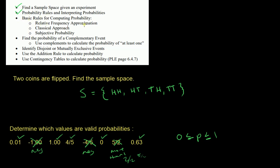Basic rules for computing probabilities — we have three methods. The subjective probability won't really be covered on the exam because it's not really a computing method; it's more of a way people sometimes approach probabilities, like a weatherman. The relative frequency approximation and the classical approach are the two you should be able to use.